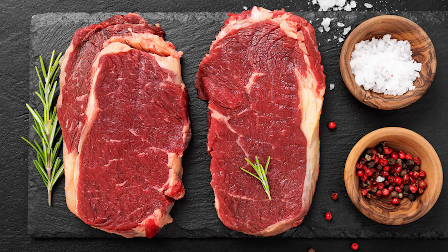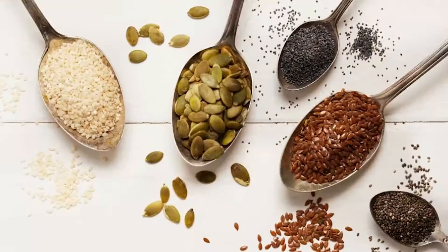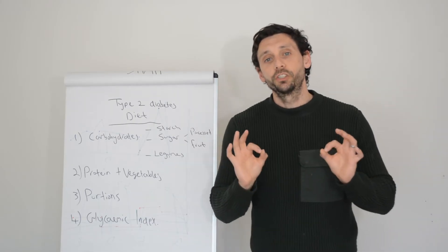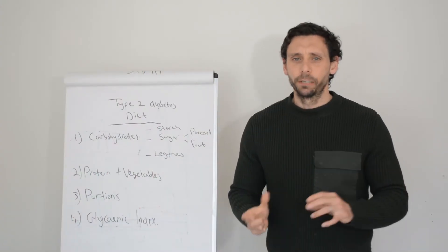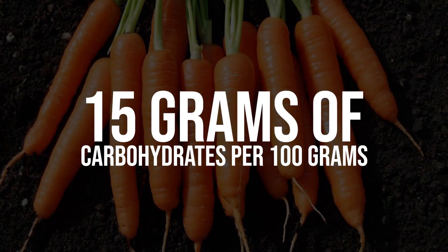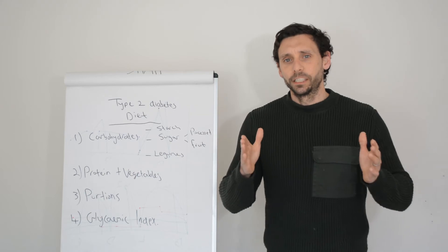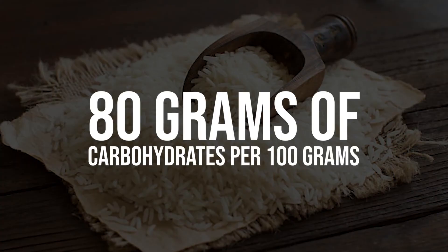We can start to migrate from big portions of carbohydrates to modest portions of carbohydrates, which we replace with foods that do not affect your blood glucose levels. That's protein foods: meat, fish, eggs, nuts, seeds, and vegetables and salad.